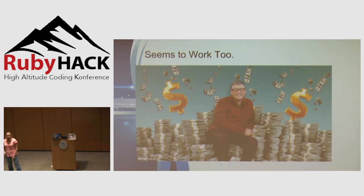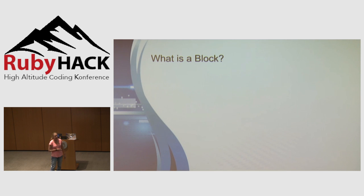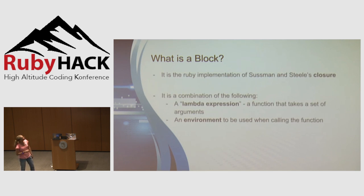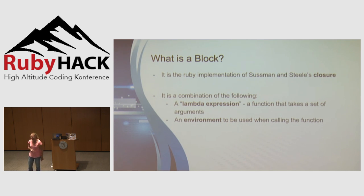At this point I realized that if I was going to understand what was going on in my RSpec example, I needed to understand the underlying mechanisms of what makes blocks so powerful in Ruby. So the first question is: what is a block really? It turns out a block is Ruby's implementation of Sussman and Steele's closure — essentially a combination of a lambda expression and an environment to be used when calling that function.